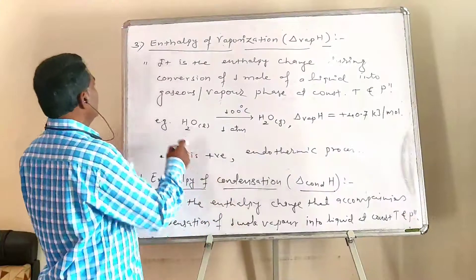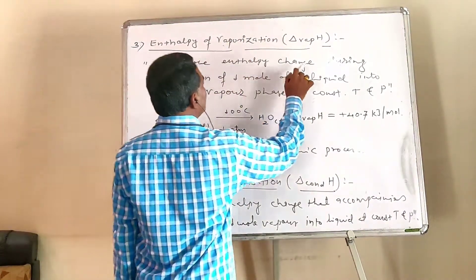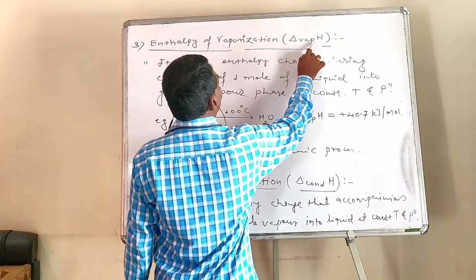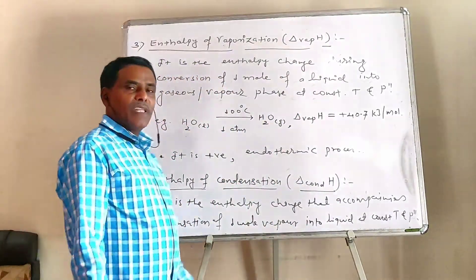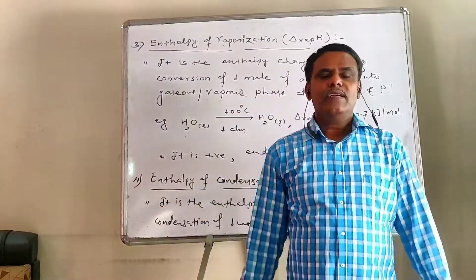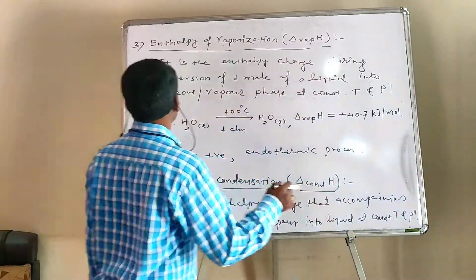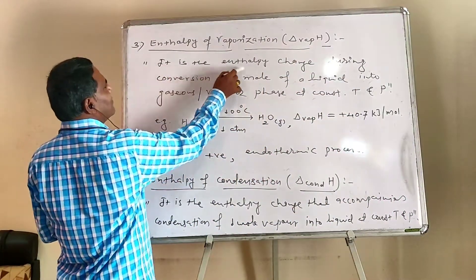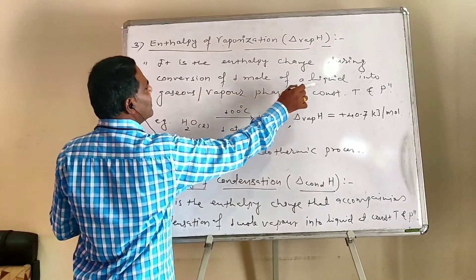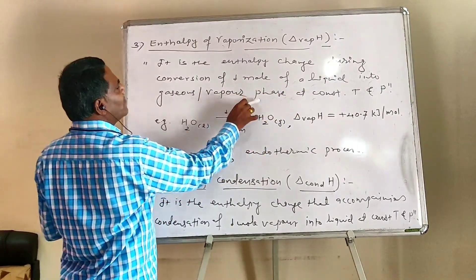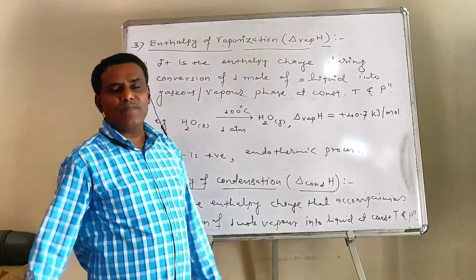Slide number three: Enthalpy of Vaporization, represented by delta vaporization H. What is vaporization? Simple — it is the conversion of liquid into vapor. It is the enthalpy change during conversion of one mole of a liquid into gaseous or vapour phase at constant temperature and constant pressure.